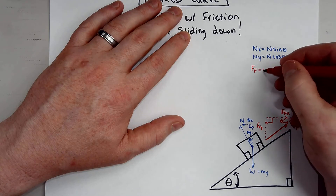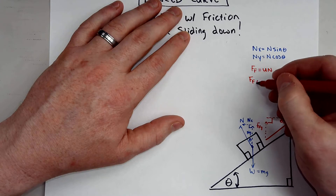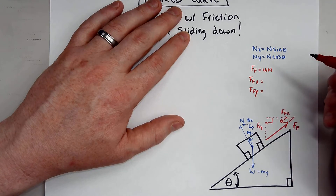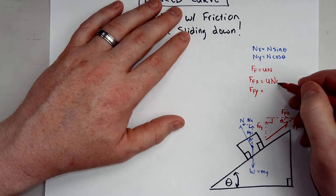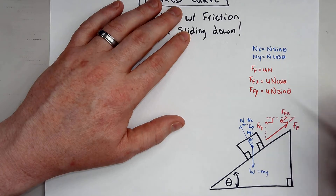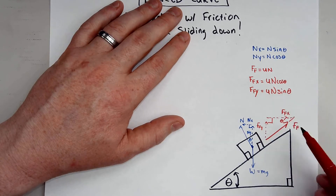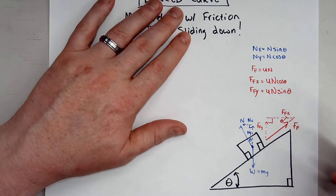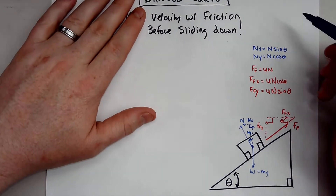The force of friction is mu times your normal force. For the components: the force of friction in the x-direction will be mu·N cosine theta, and in the y-direction it will be mu·N sine theta. For the y-component you have the hypotenuse and the opposite, so that's sine; for the x-component you have the hypotenuse and the adjacent, so that's cosine.